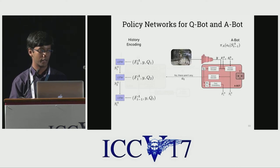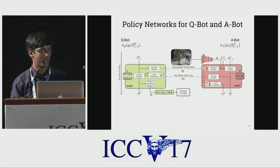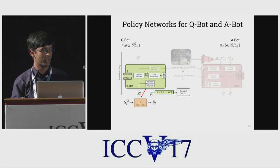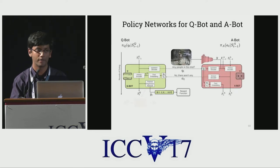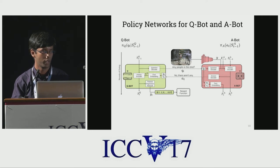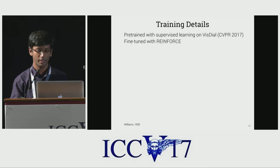Conditioned on this dialogue history encoding, Abot generates an answer, which gets passed over to Qbot. Qbot embeds the question and answer in its fact embedding, updates its history, and has a feature regression network that makes a prediction of the image feature vector — a fully connected layer from the dialogue history encoding. The reward for Qbot and Abot is derived from this prediction. These models are pre-trained with supervision on the visual dialogue dataset and fine-tuned with REINFORCE, a policy gradient training algorithm.